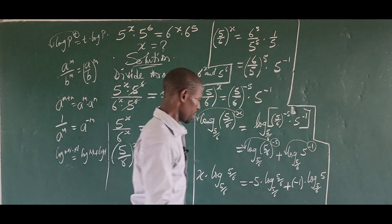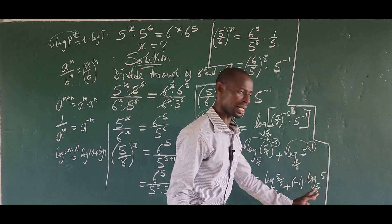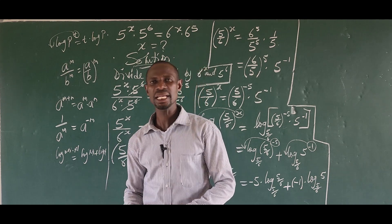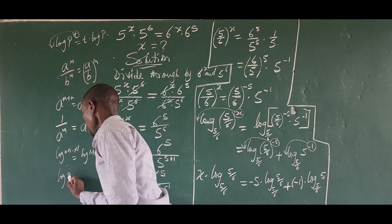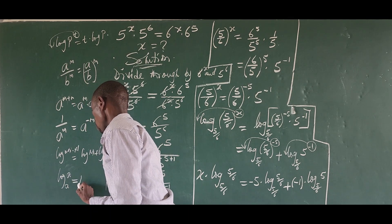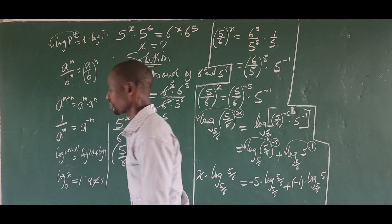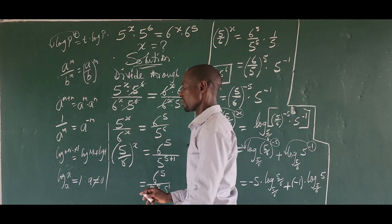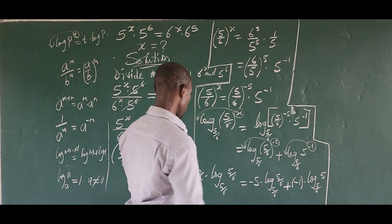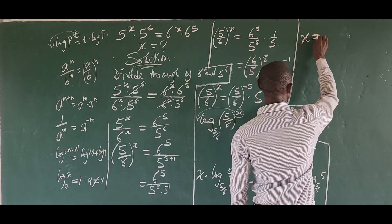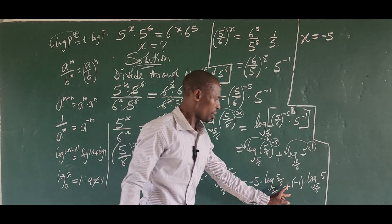We now apply the same-base law of logarithms, which states that log base a of a = 1, provided a is not equal to zero. So log base (5/6) of (5/6) = 1 on both sides. This simplifies to: x = −5 − log base (5/6) of 5.